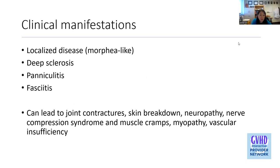In terms of clinical manifestations, there is a spectrum. We can see localized disease, which is morphea-like — localized areas of sclerosis — all the way to disseminated sclerosis with deep sclerosis, panniculitis, and fasciitis. Skin sclerosis can lead to joint contractures, skin breakdown and increased risk of infections, neuropathy, nerve compression syndrome, muscle cramps, myopathy, and vascular insufficiency.